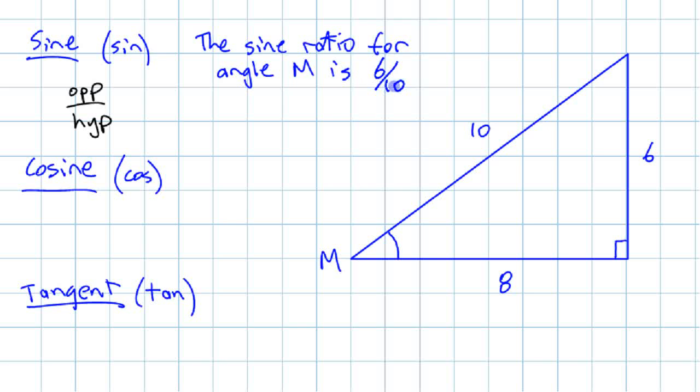I'm just going to put 6 over 10 like that. Or as a decimal, 0.6. If you want to write it algebraically or with symbols, instead of words, all you have to do is say sine M equals 6 tenths. Or if you want to divide it, 0.6. That's the sine ratio for that.